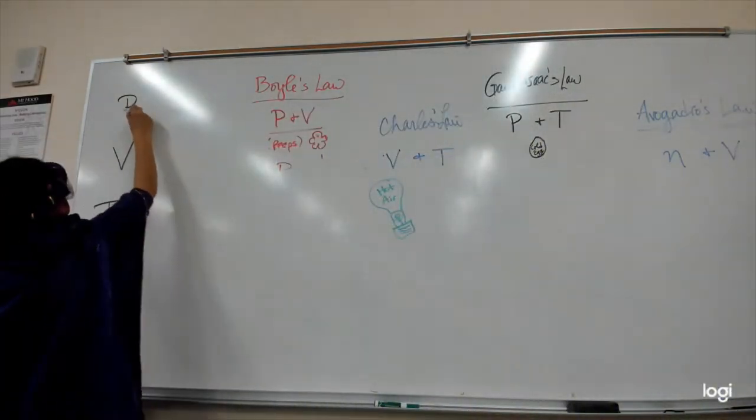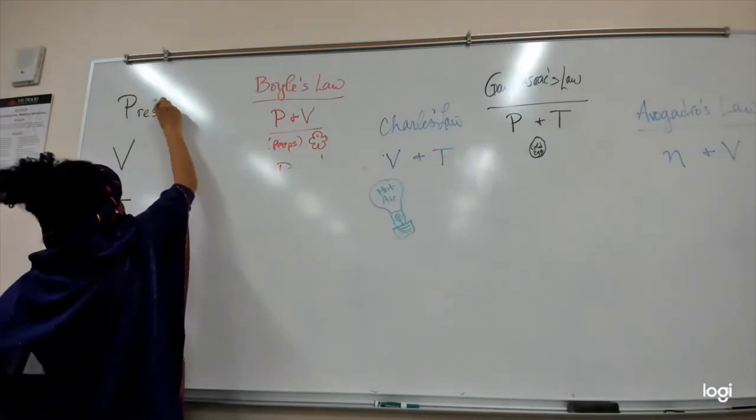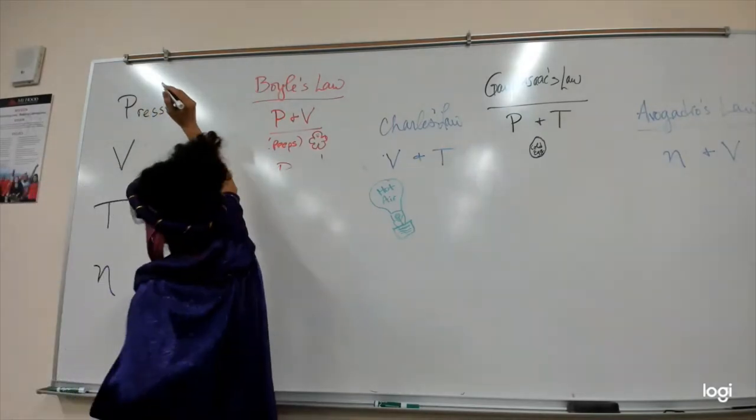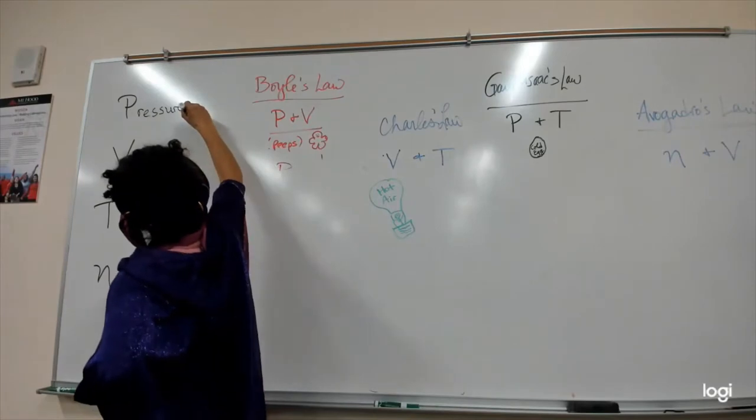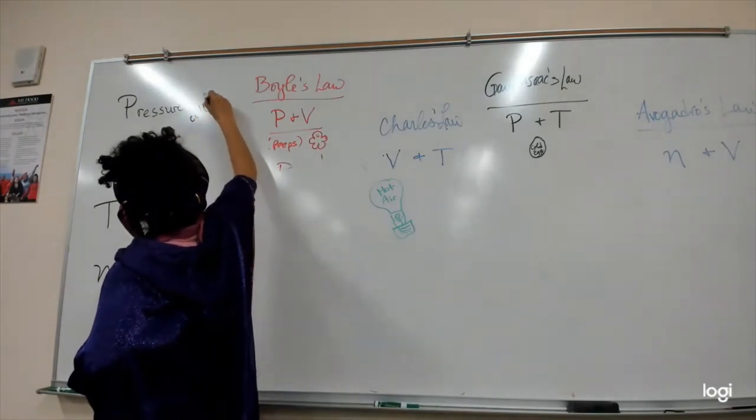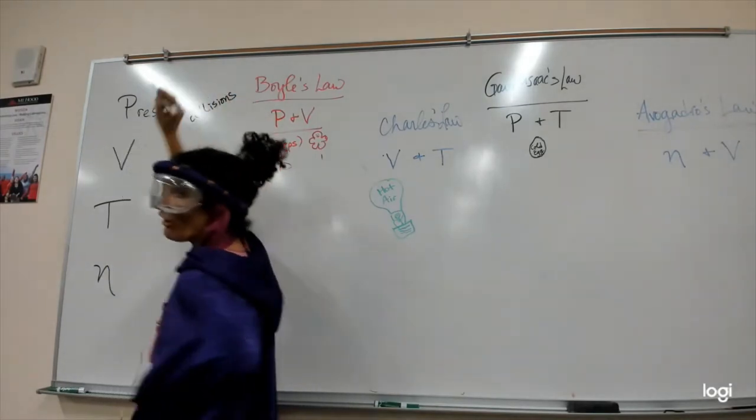P is for pressure. And pressure is, in one word, collisions. How many collisions are happening?